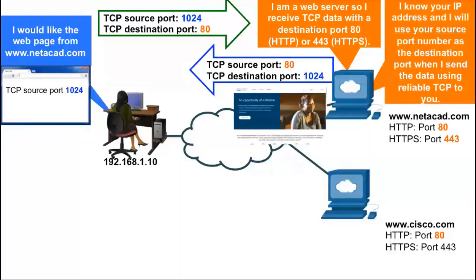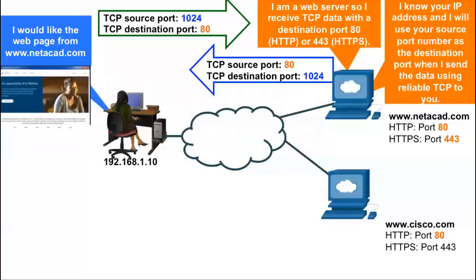After receiving the request from the client, when the www.Netacad.com web server sends the client the data it has requested, it will be sent from its TCP source port 80 — in other words, from its HTTP application. When sending the data to the client, the server will use the client's TCP source port as the TCP destination port, in this case port 1024. This is so the client knows which specific application — the specific web browser window or tab — this data is intended for.